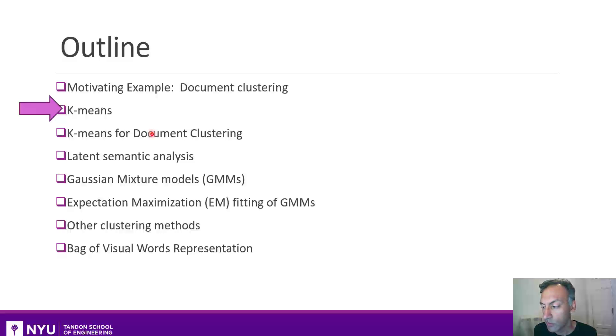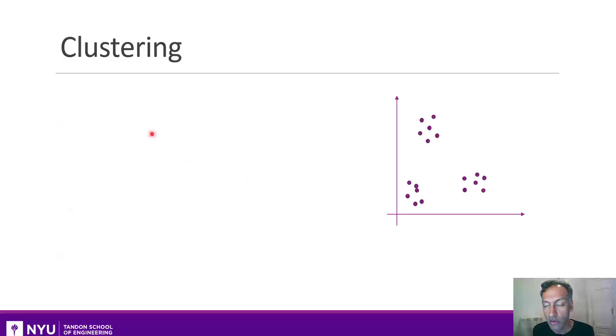Now let's start with describing our most basic clustering algorithm, which is called k-means. To set this up, we have some data, which we'll describe as an n by d matrix. So there are n samples in some d-dimensional space.